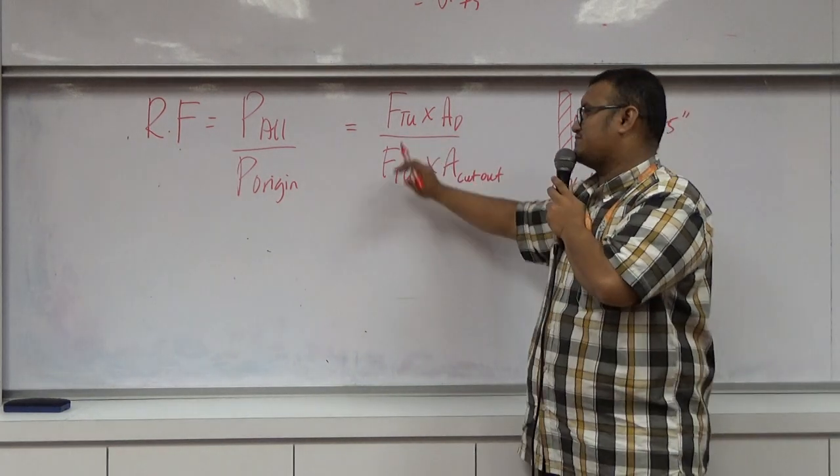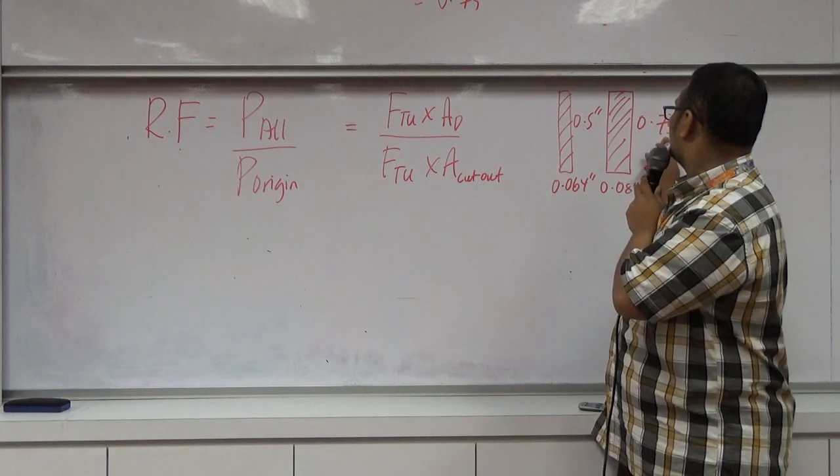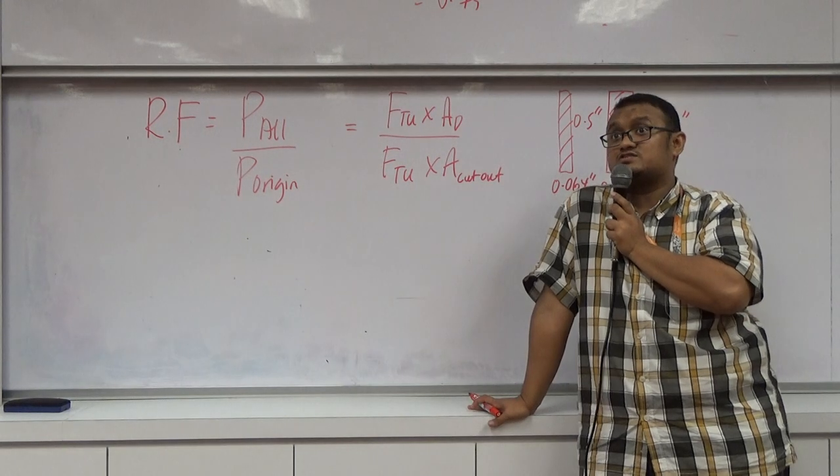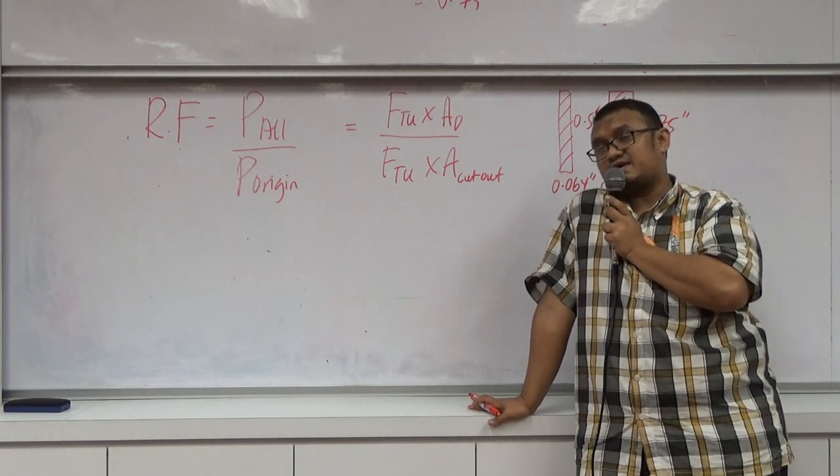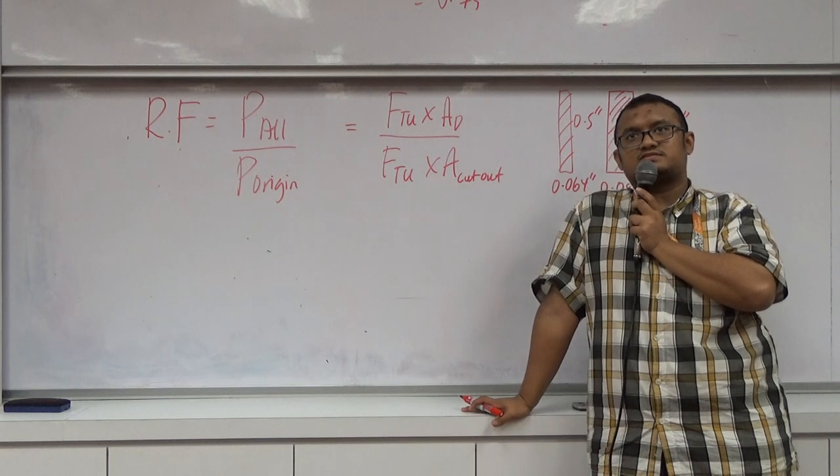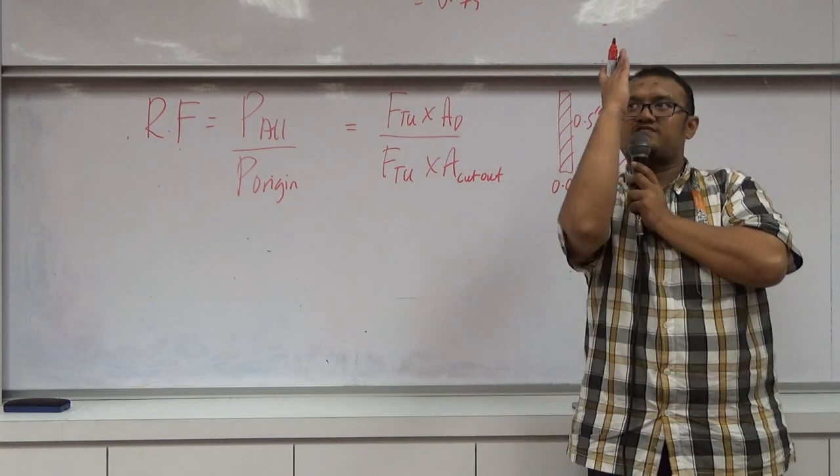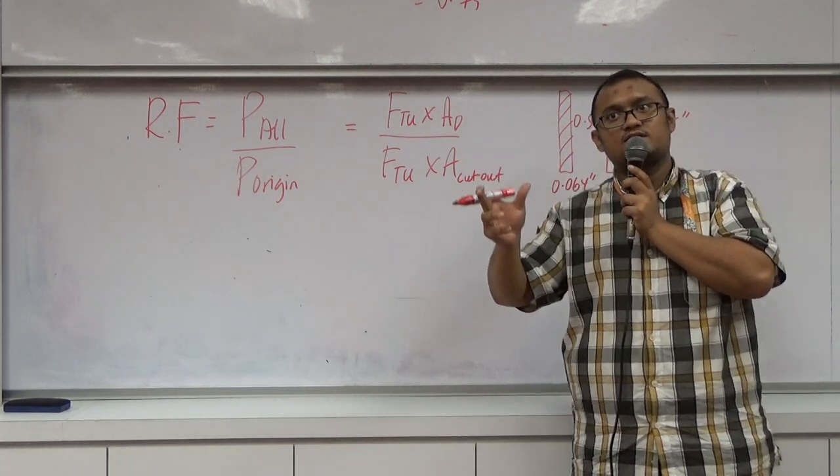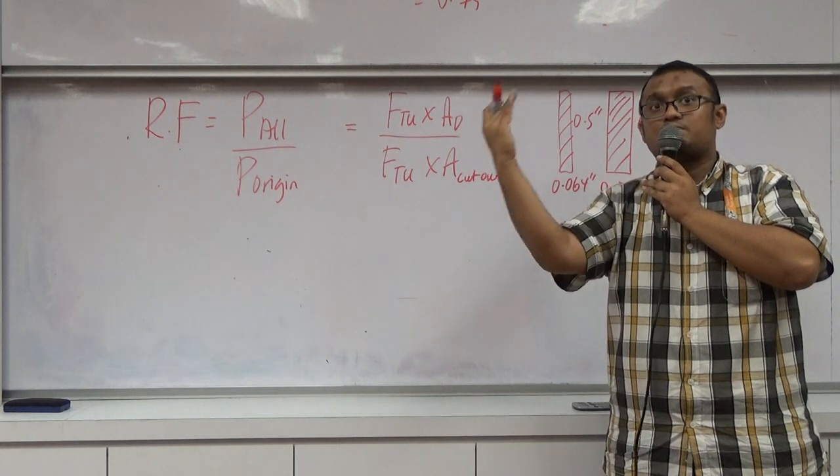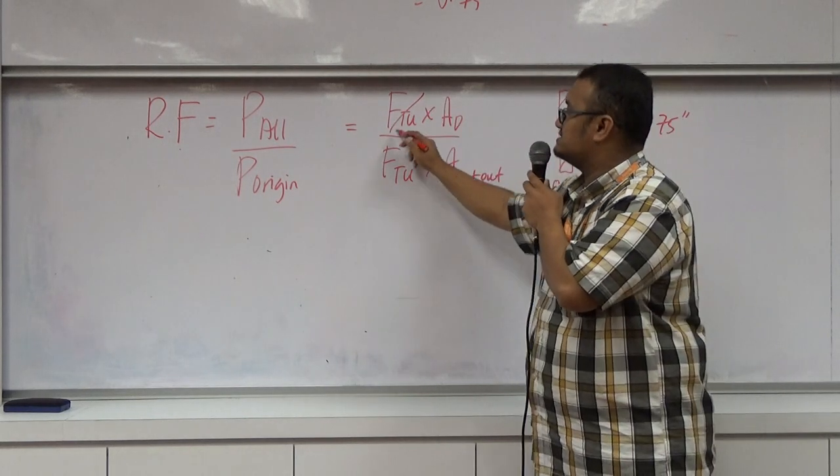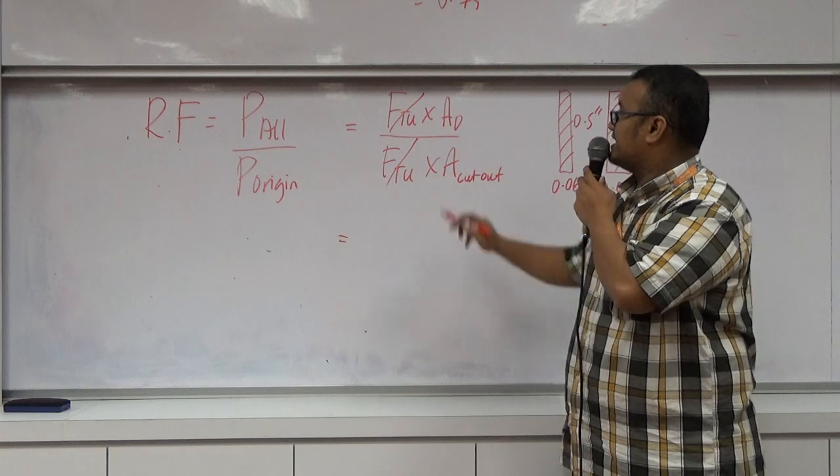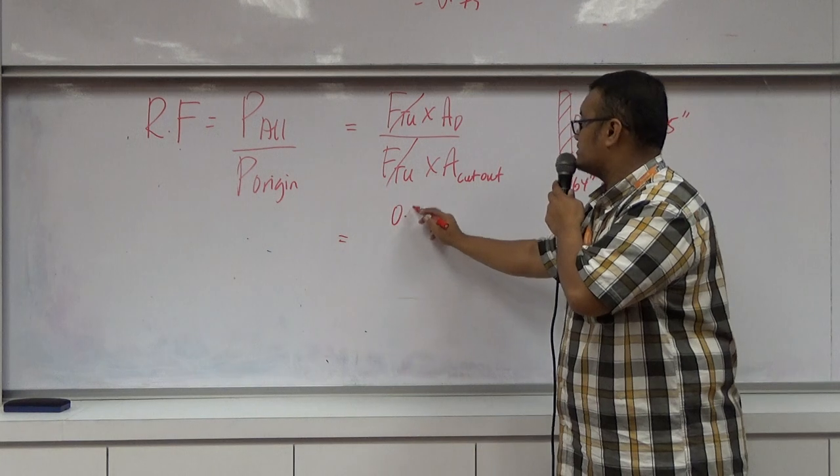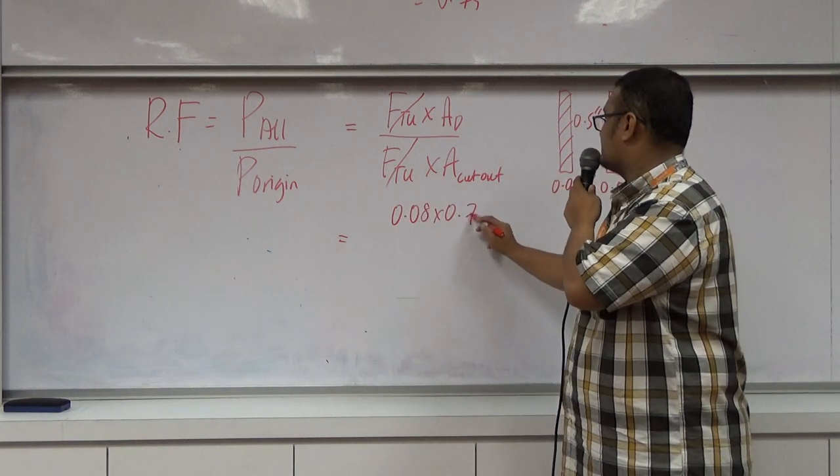Let's assume FPU for 0.08 and 0.04 inches of thickness is the same. That's the table I will show you after this, that shows the value of FPU for each thickness. It will be slightly different, but sometimes it is stable in one part. So let's assume this is the same. So A for this area is going to be 0.08 times 0.75.